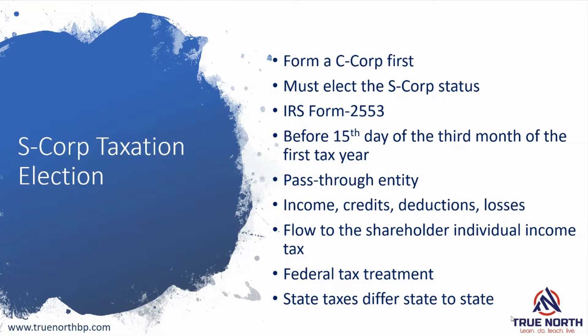Now how do you make that election? You make that election by filling out form 2553 and submitting it to the IRS. There's a deadline for that submission — you must submit it before the 15th day of the third month of your first tax year. So if you've just incorporated, that means you have to make your S corp election before the 15th day of the third month right after your incorporation.